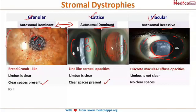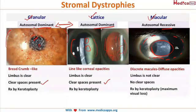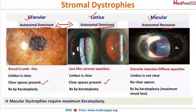The treatment for all three types is keratoplasty. Because visual loss is maximum in macular dystrophy, it requires the maximum number of keratoplasties. That covers what you need to know about granular, lattice, and macular dystrophies for the exams.